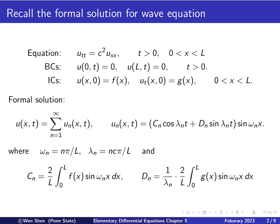The coefficients c_n and d_n depend on the initial conditions: c_n depends on f, and d_n depends on g. c_n can be computed as the Fourier sine series of the function f, and d_n times lambda_n is the Fourier sine coefficient of g. This was derived in the previous video.